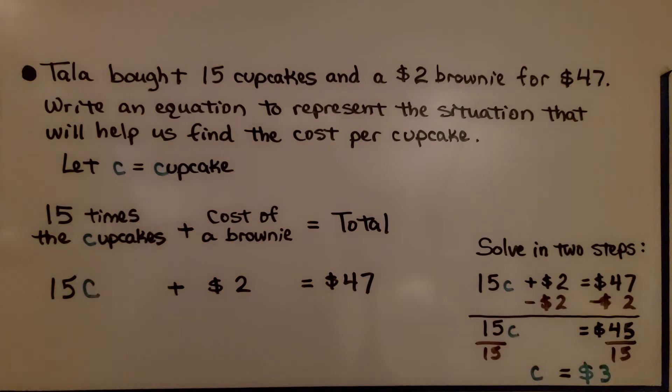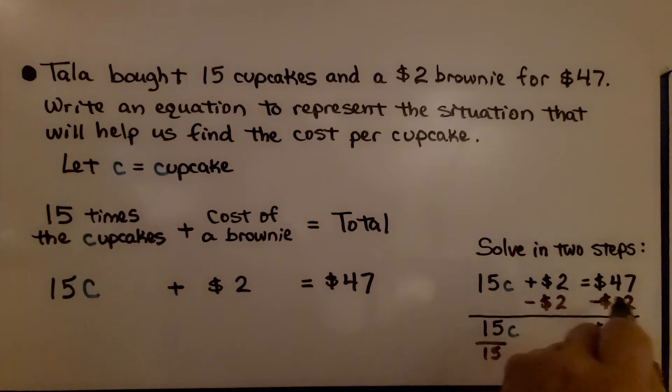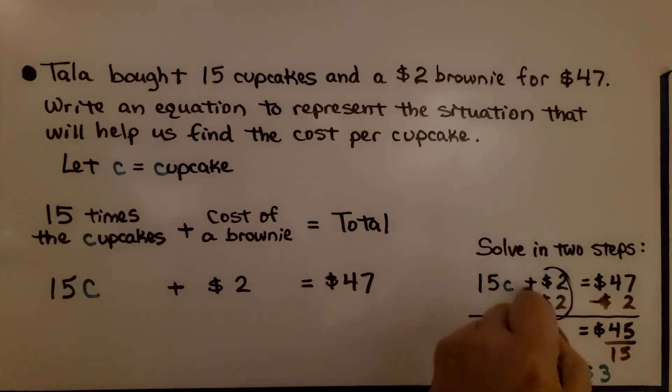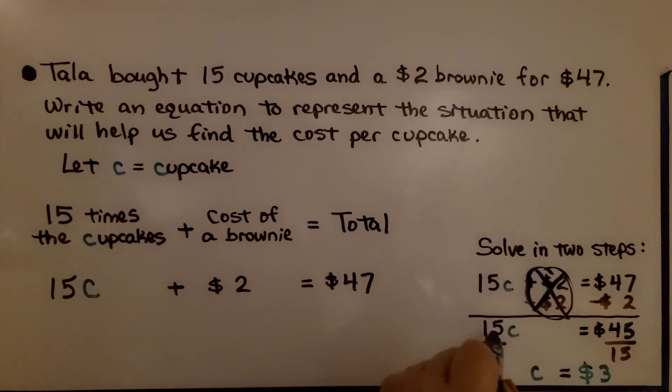We could solve this in two steps. We can take away the $2 from each side of the equal sign. That will create a zero pair here because we have a plus $2 minus $2. Now we just have 15C equals $45.